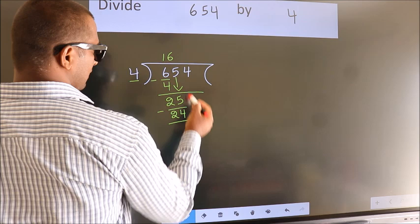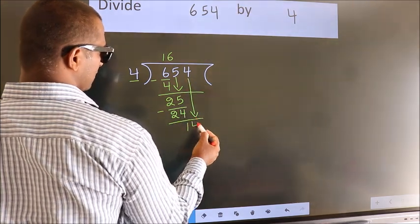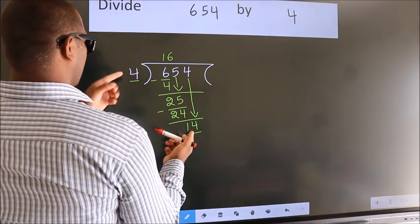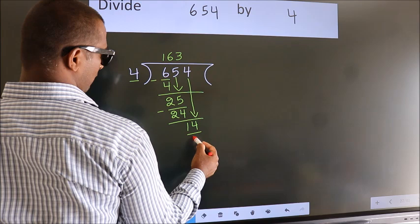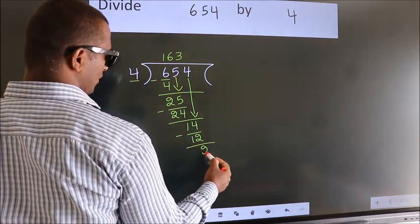After this, bring down the next number. 4 down, so 14. A number close to 14 in the 4 times table is 4 times 3, which is 12. Now we subtract and get 2.